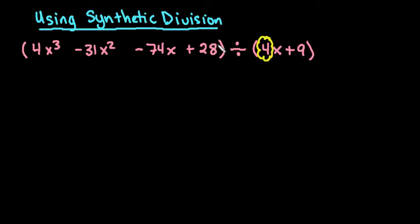This one is not missing any terms, so we don't have to add any zeros. If it went from degree 4 to degree 2, you'd be missing the degree 3 term and you'd put a 0 in between. You always want descending order of exponents — 3, 2, 1, 0 — which this one already has.